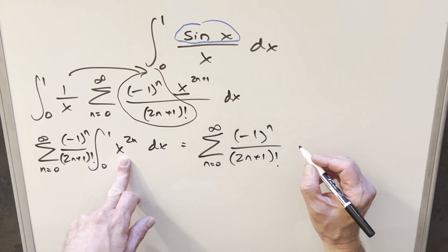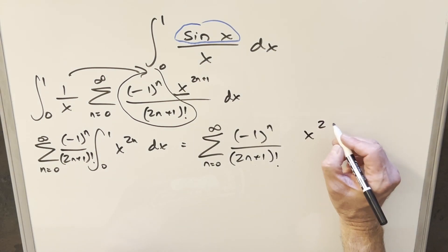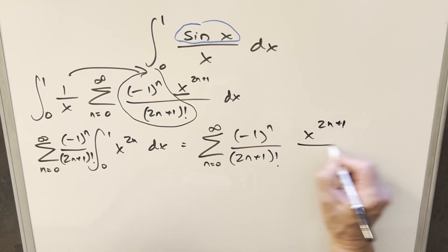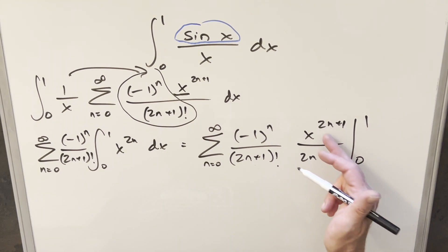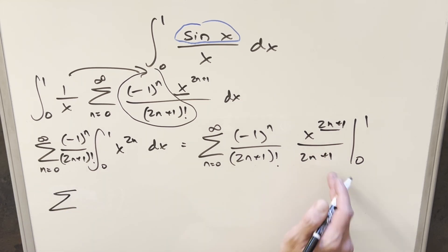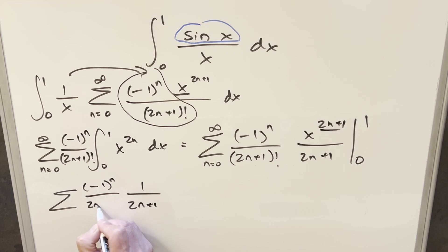All this other stuff is constant with respect to dx, so we'll bring it out front and write this as minus 1 to the n over 2n plus 1 factorial. Integrating using power rule, this becomes x to the 2n plus 1, then divide by the power 2n plus 1, evaluated from 0 to 1. This is pretty nice because when you evaluate at 0, the whole thing is 0. You plug in 1, the exponent doesn't matter, the numerator is just 1.